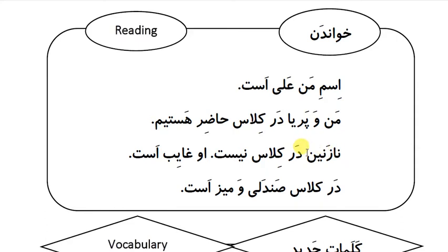نازنین. نازنین is also a common name for girls in Iran. نازنین در کلاس نیست. او غایب است. در کلاس سندلی و میز است.